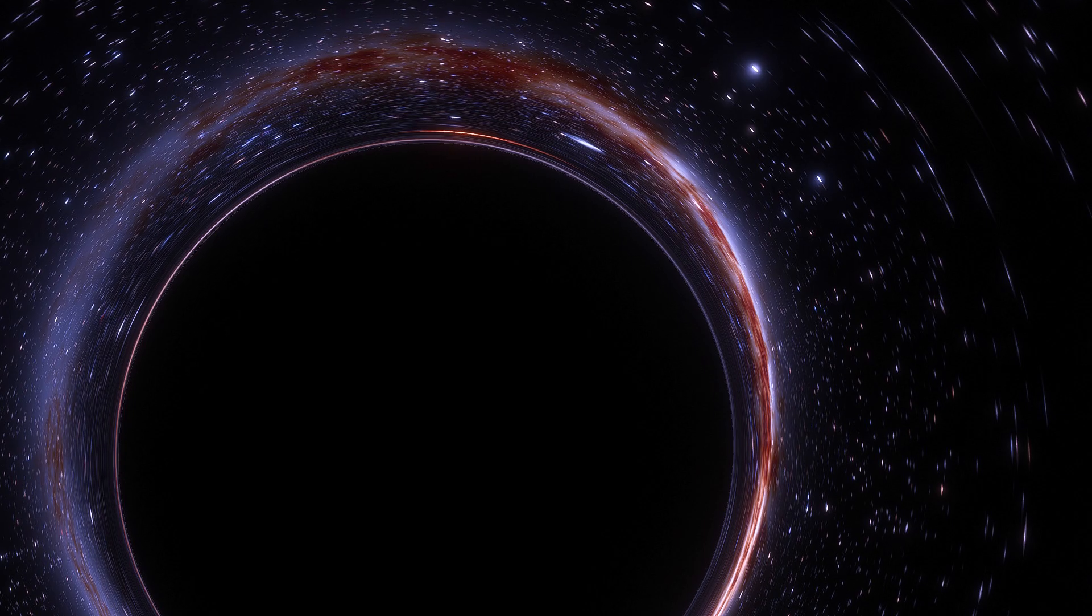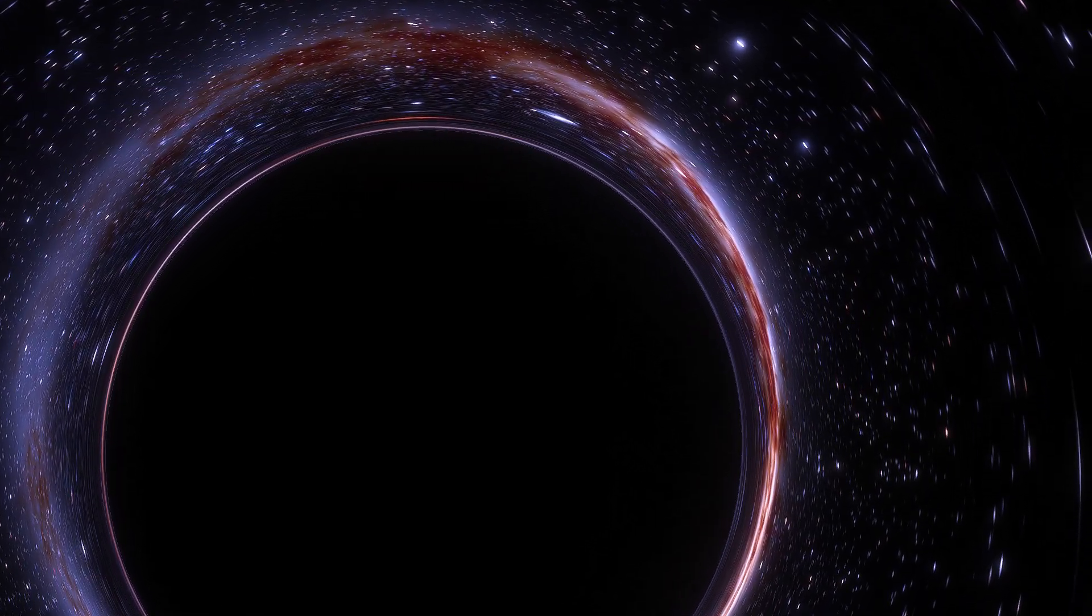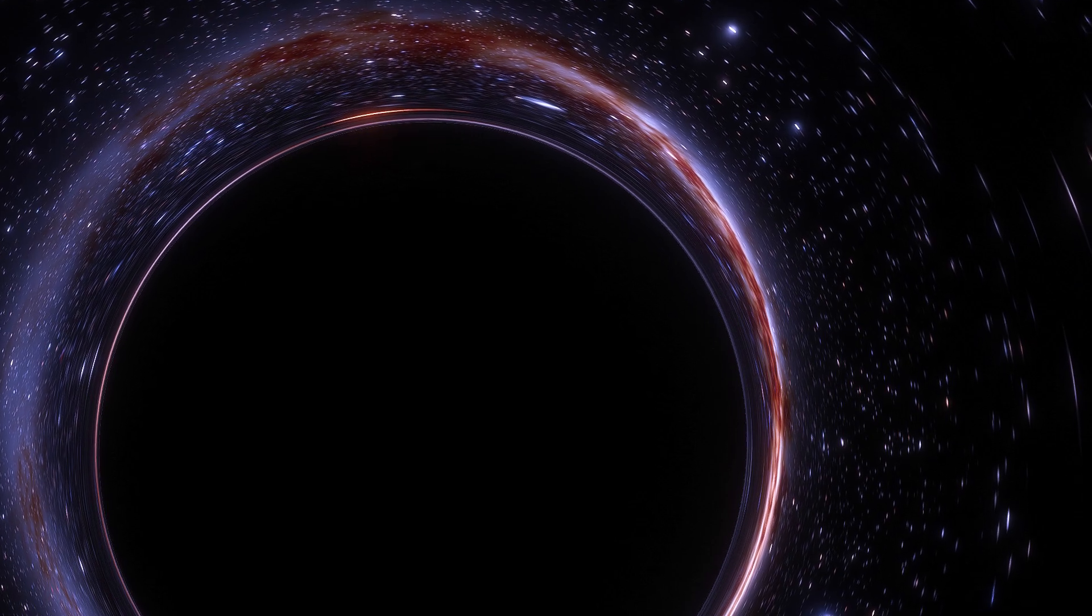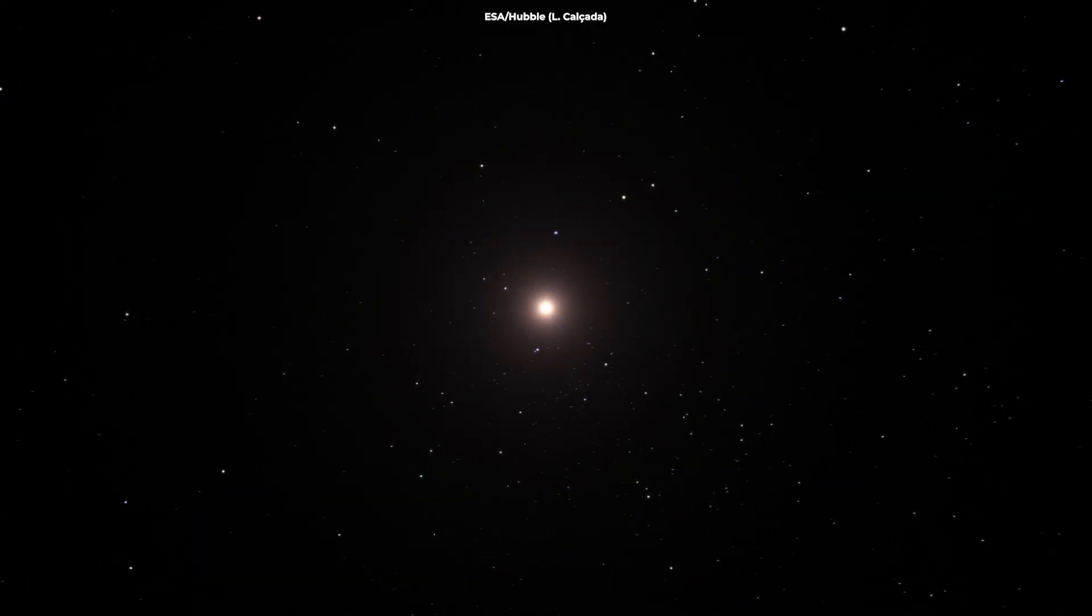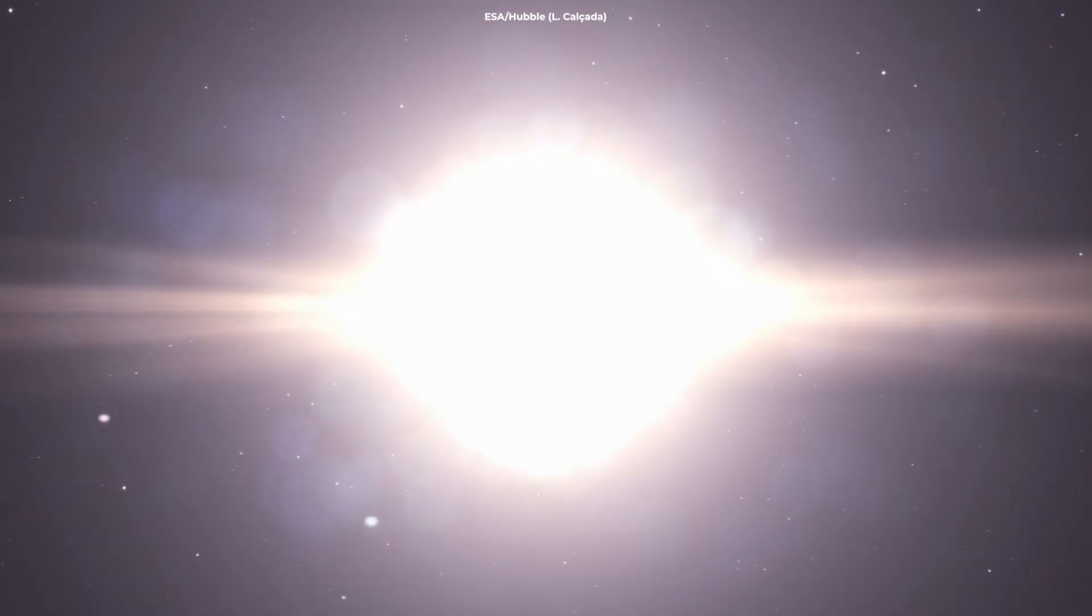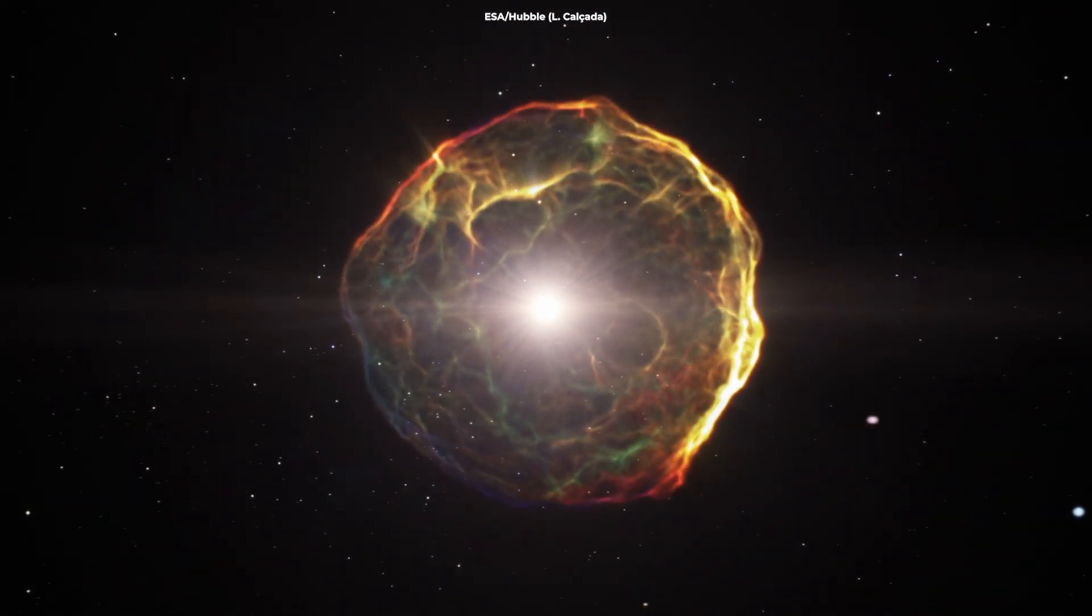But let's quickly cover the basics for any newcomers to our channel. A black hole is a region in space where gravity pulls so much that even light cannot get out. They can form in a few ways, but the most common is the collapse of a massive star. When a star runs out of nuclear fuel, it can no longer support its weight.